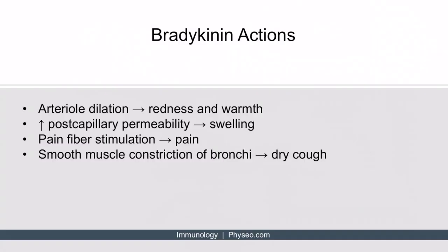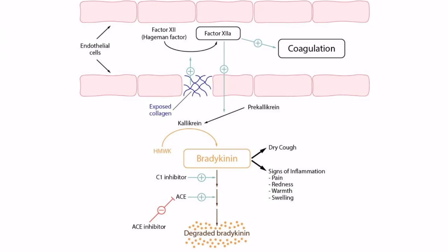Now let's talk about the last action of bradykinin: causing smooth muscle constriction of the bronchi. If bradykinin levels are high enough, it can cause the patient to have a dry cough — sometimes referred to as a bradykinin cough. Bradykinin therefore also causes a dry cough, in addition to the other signs of inflammation.